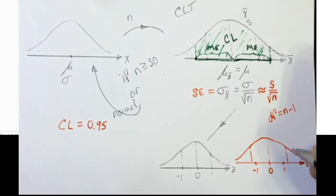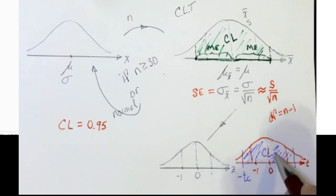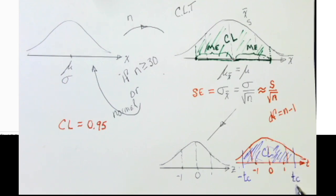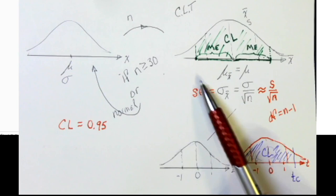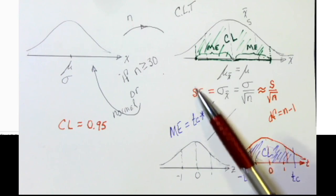We'll find that margin of error by finding a critical T value, so that between a negative critical C value and a positive critical C value, between here and here, that will contain 95% of the population in this T distribution. Now, T values tell us how many standard deviations we need to be away. SE will tell us how big a standard deviation is, so our margin of error will be TC times this SE.